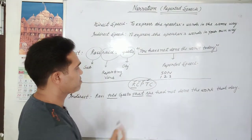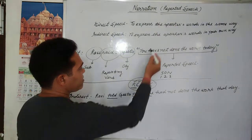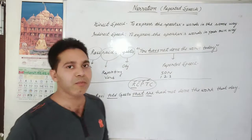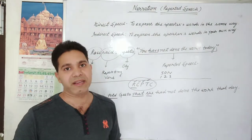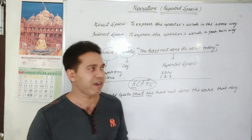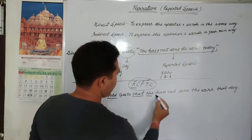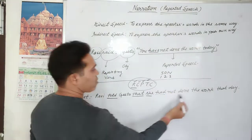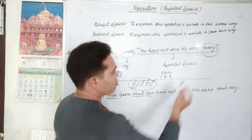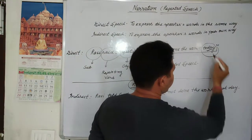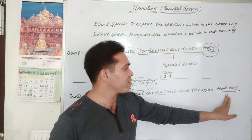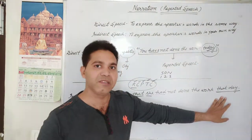After that, T for tense: 'have' is the helping verb of present perfect tense, and present perfect tense goes into past perfect tense. So in place of 'have', we write 'had' — 'had not done the work'. Last is condition: 'today' changes to 'that day'.